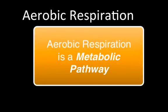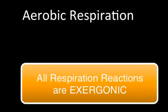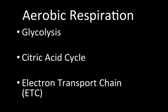Aerobic respiration is a complex metabolic pathway. A metabolic pathway is a series of reactions in which the product of one reaction is the reactant in the next. The series of reactions are all spontaneous and therefore exergonic. The process of aerobic respiration has been broken down into three distinct processes called glycolysis, the citric acid cycle — sometimes known as the Krebs cycle — and the electron transport chain.